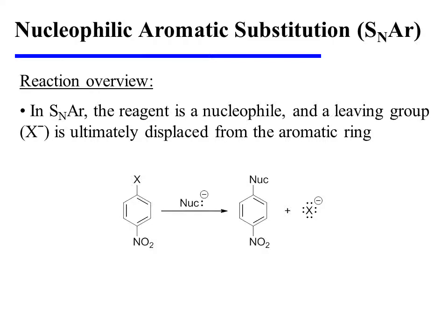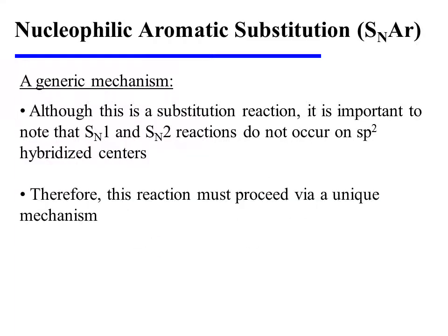In SNAr, the reagent is a nucleophile, and a leaving group is ultimately displaced from the aromatic ring as it is replaced by that nucleophile. Notice the presence of electron-withdrawing groups on the reactant. Although this is a substitution reaction, it is very important to remember that SN1 and SN2 reactions do not occur on SP2 hybridized centers. Therefore, this reaction must proceed via a unique mechanism.